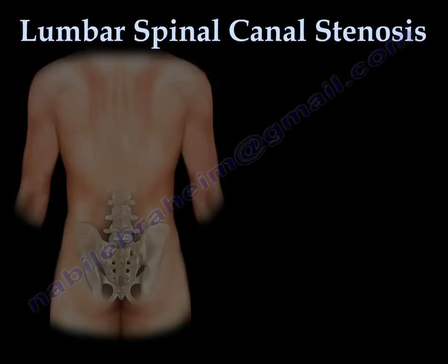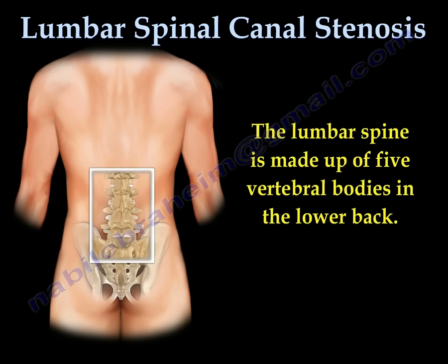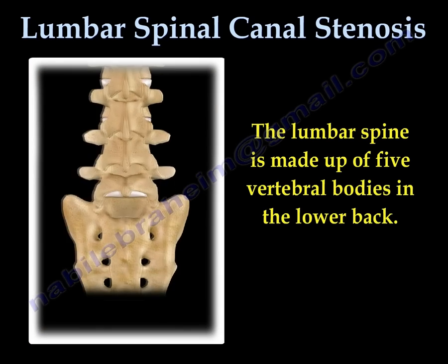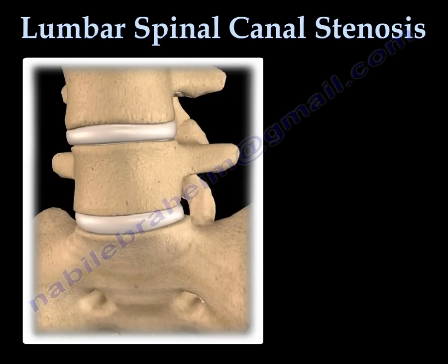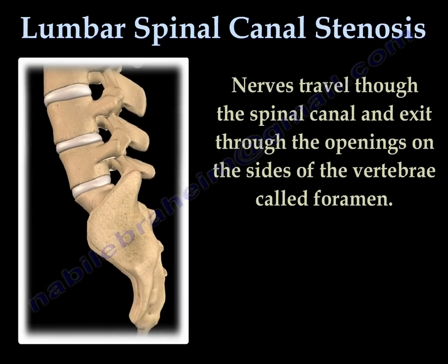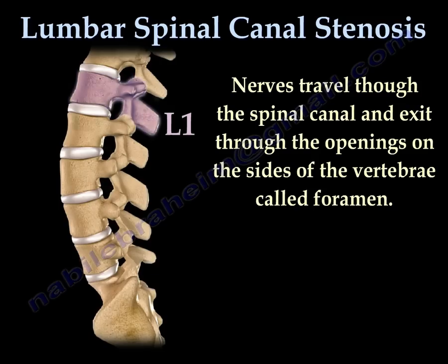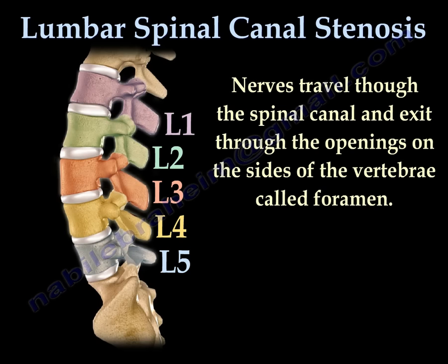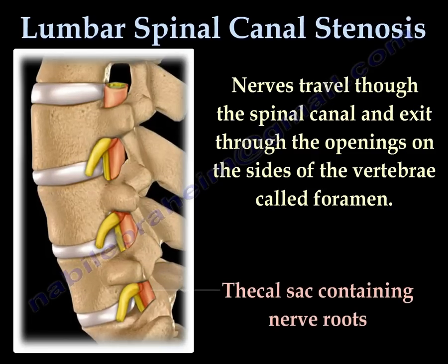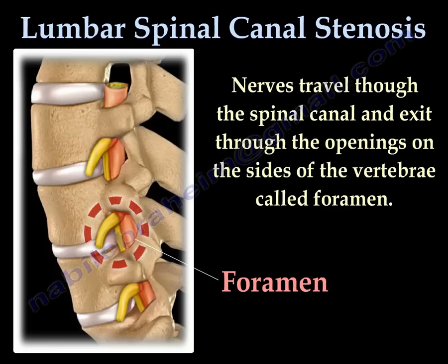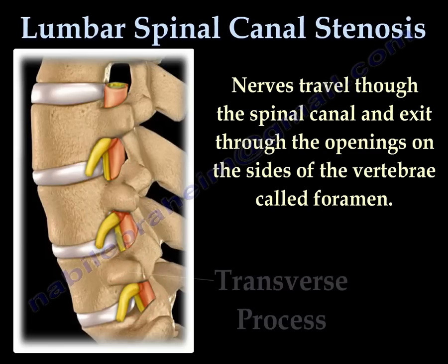Lumbar spinal canal stenosis. The lumbar spine is made up of five vertebral bodies in the lower back. Nerves travel through the spinal canal and exit through the openings on the sides of the vertebrae called the foramen. Here you can see the thecal sac containing the nerve roots and the nerve root going through the foramen, as well as the transverse process of the spine.